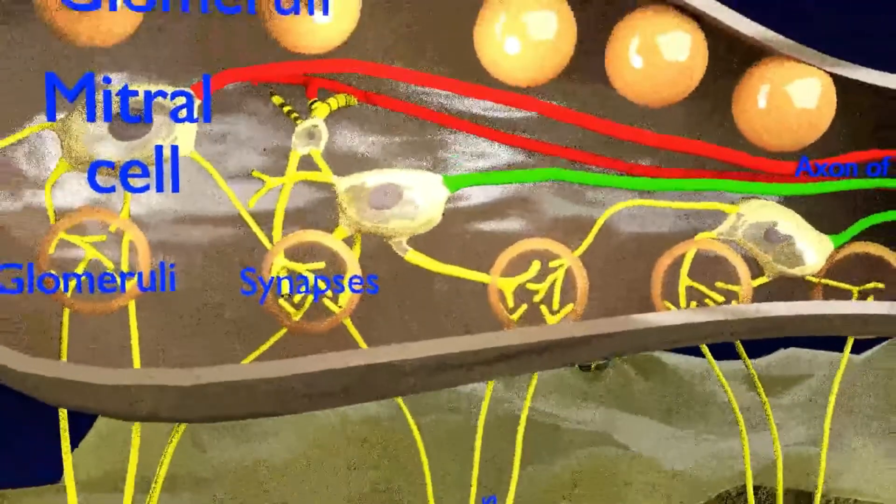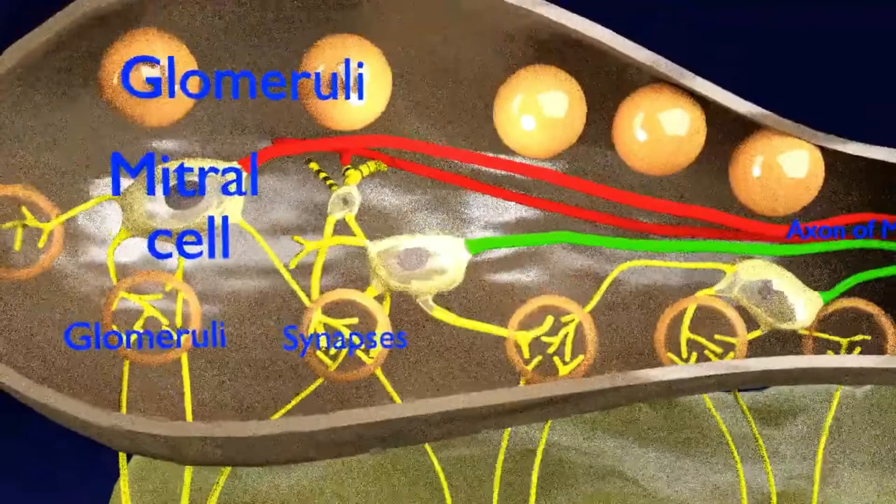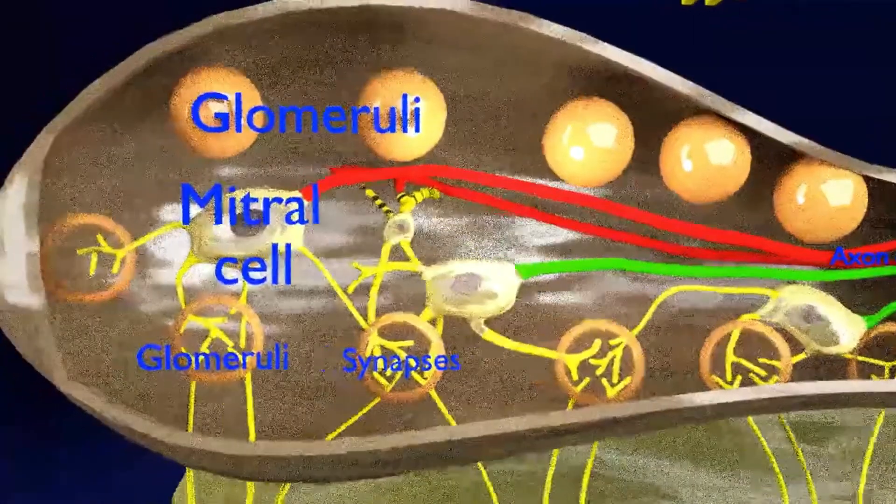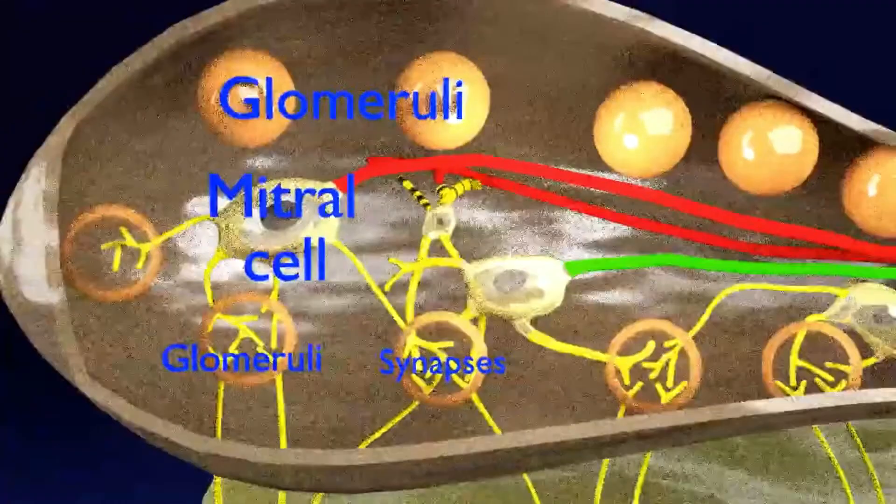In the olfactory bulb, these axons synapse with second-order neurons. These are mitral cells. The synapse occurs at the structures called glomeruli.